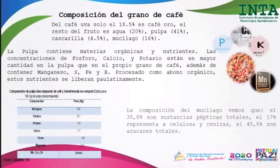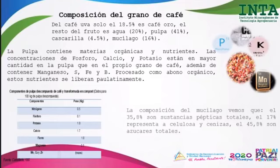Entrando en materia, hablaremos de la composición del grano de café. En su mayoría, el componente de la pulpa, la cascarilla y el mucílago representan gran parte del grano de café. El grano oro representa solo un 18%, y el resto son materiales que consideramos subproductos. Sin embargo, la pulpa de café y las aguas mieles tienen grandes contenidos nutricionales y materia orgánica, con mayores cantidades de fósforo, calcio y potasio —los macronutrientes.